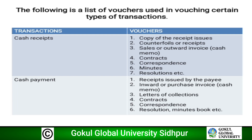The first transaction is cash receipts, and the vouchers included in cash receipts are: copy of the receipt issued, counterfoil of receipts, sales or outward invoice, cash memo, contracts, correspondence, minutes and resolutions.